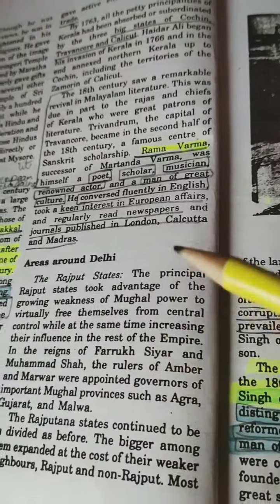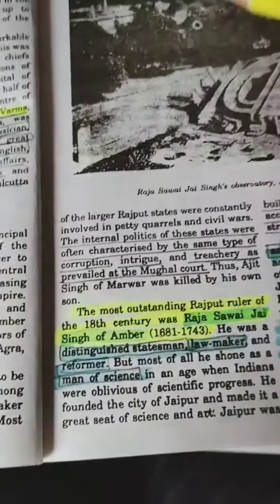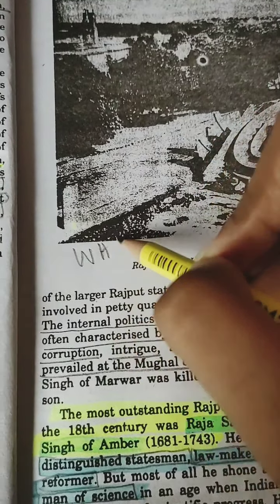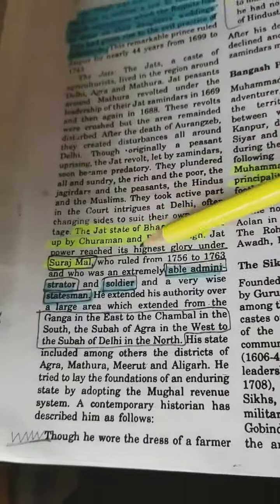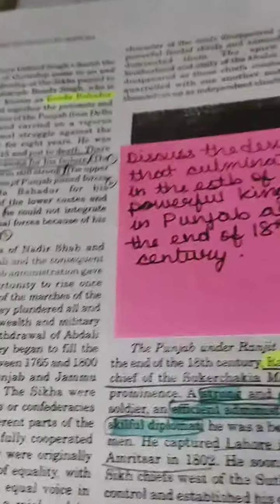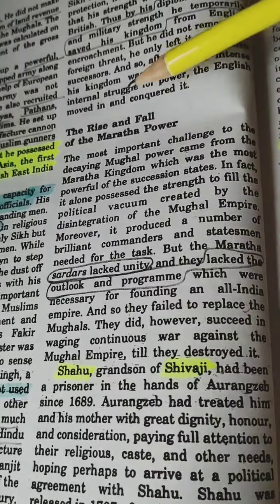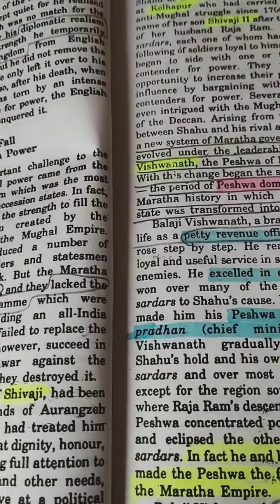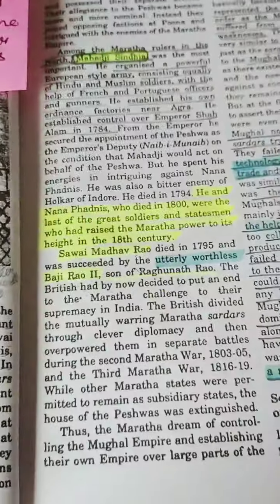Then we have the areas around Delhi — how the Rajput states emerged, including Jaipur, associated with Raja Man Singh, which has now been recognized as a UNESCO World Heritage Site. We also have the Jat state, the Bangash Pathans and Rohillas, and the Sikhs and how they emerged in the 18th century. The rise and fall of the Marathas, along with their features, characters, and the Anglo-Maratha wars, will be covered in the next video.